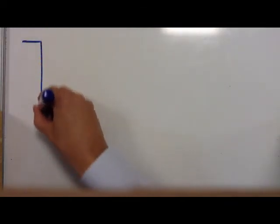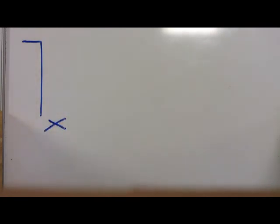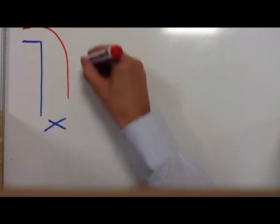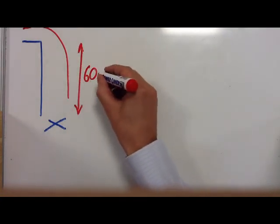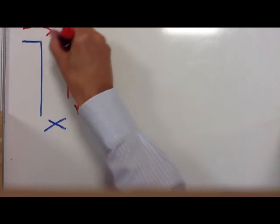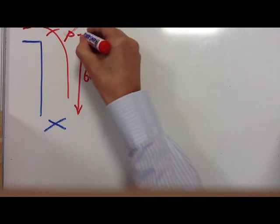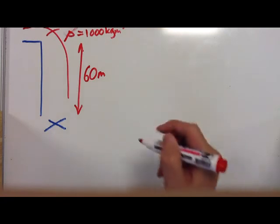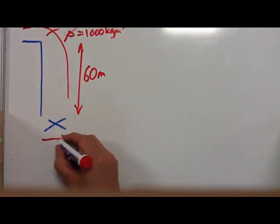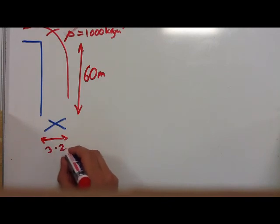Quick video going through a question we're doing in class on water falling down from a dam and hitting a turbine. The first thing we do is draw it like this. Here's our water, and we put on the things we know. We know the height is 60 metres, we know the density of water is 1,000 kilograms per metre cubed, and we know that the diameter of the turbine is 3.2 metres.